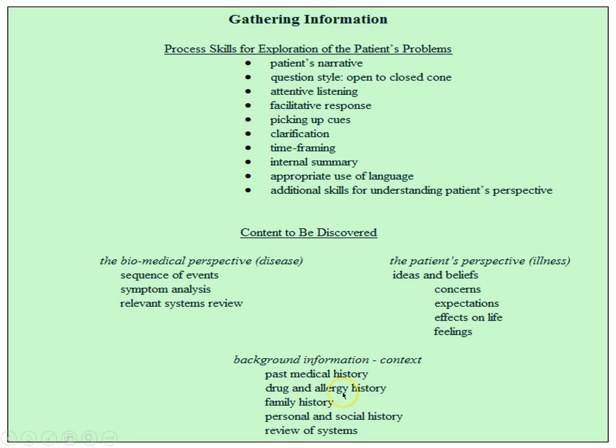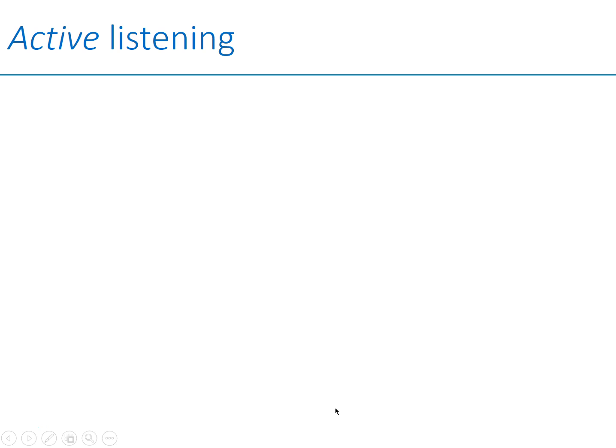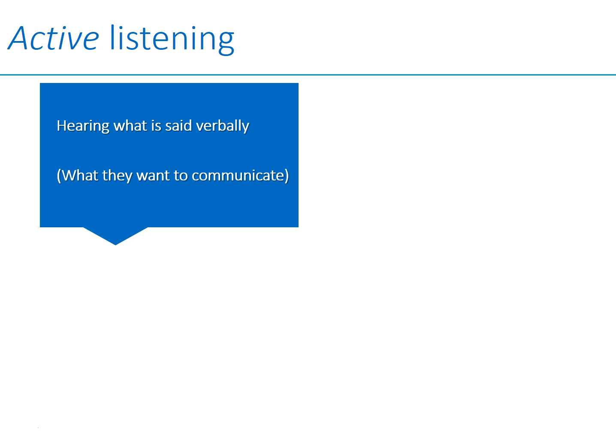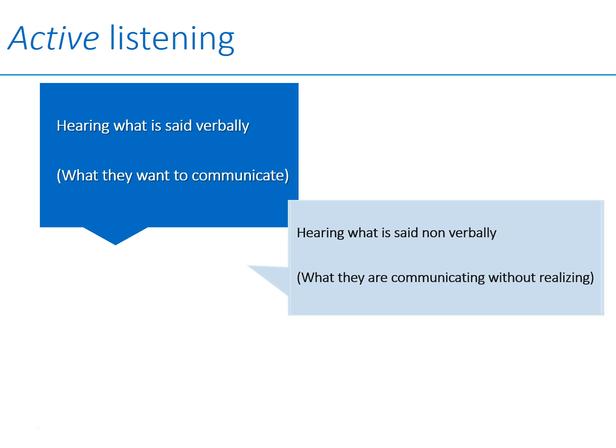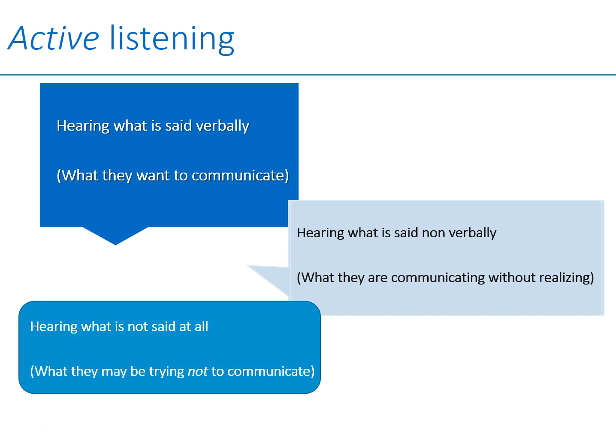You obviously also need to pick up relevant background history to form a differential diagnosis and ultimately reach the correct diagnosis. You'd need elements such as medication history, allergy, and family history. Active listening is about hearing what is said — what the patients want to communicate — but also what is not said verbally: what they are communicating through nonverbal demonstrations without perhaps realizing it. You also want to keep your ears open for what is not said at all, which might be something they do not wish to communicate — for example, concerns about an emerging depressive illness or concerns about sexually transmitted infection.